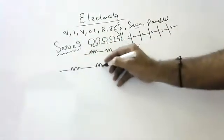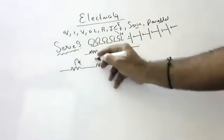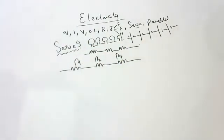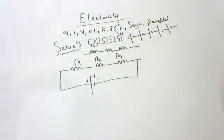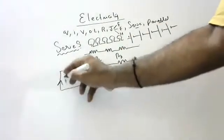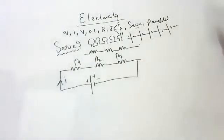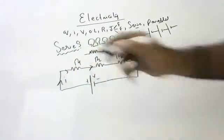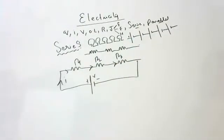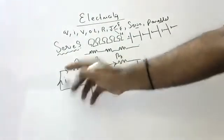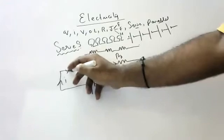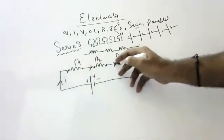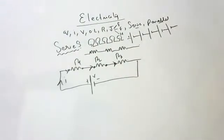Imagine three resistors are connected in series, to a battery of potential V. This battery delivers a current I. The same current I will flow through R1, the same current I will flow through R2, the same current I will flow through R3. But all of them have different resistance values, so potential is shared. Children, I can understand — potential is shared.